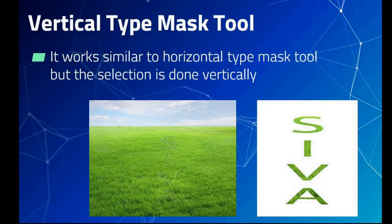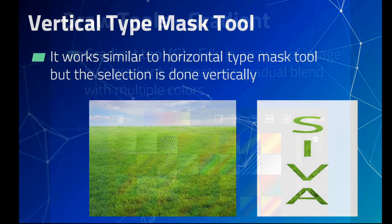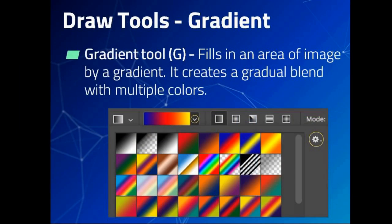The Vertical Type Mask tool works similarly to the Horizontal Type Mask tool, but the selection is done vertically. An example is given in the figure.